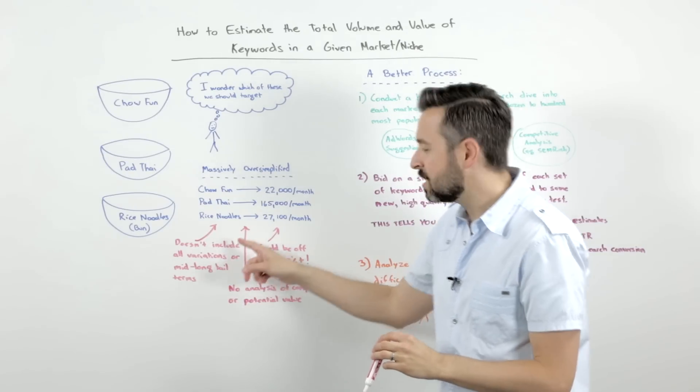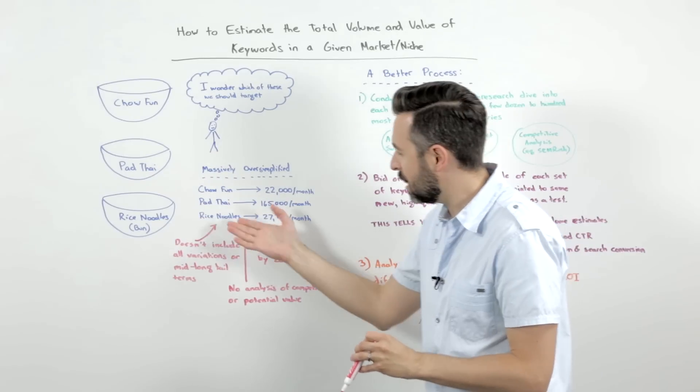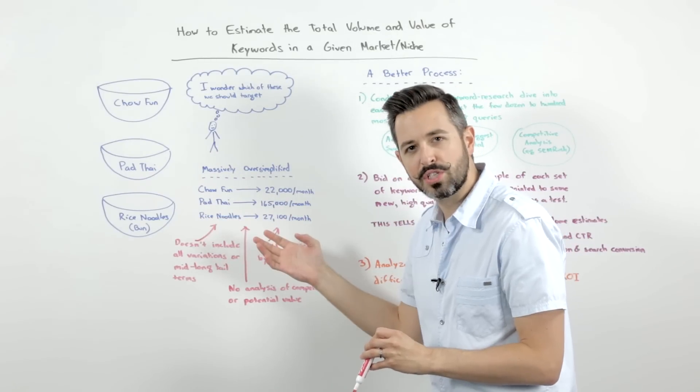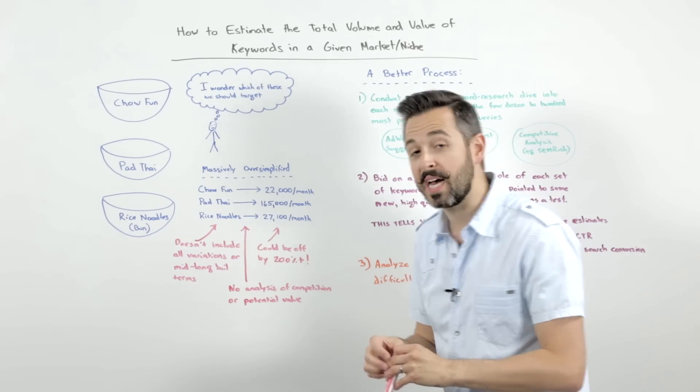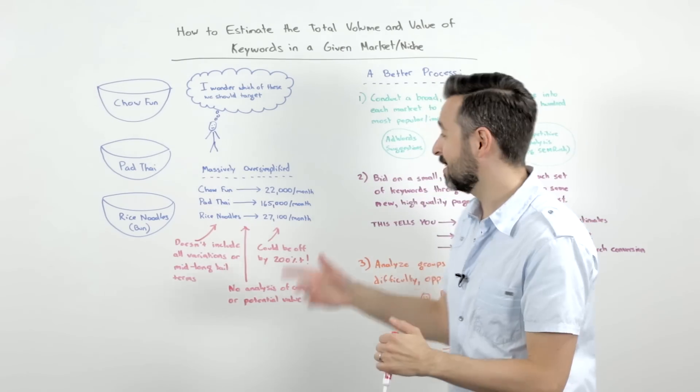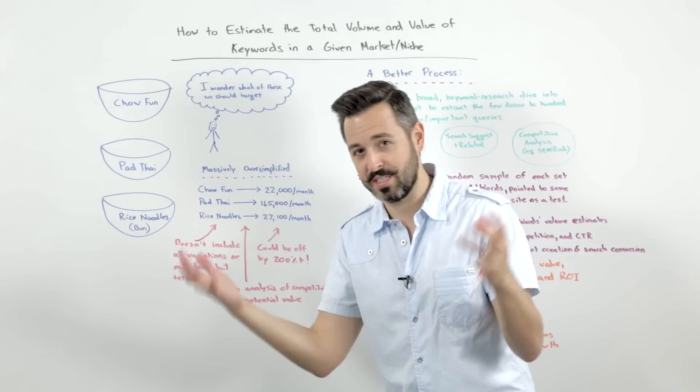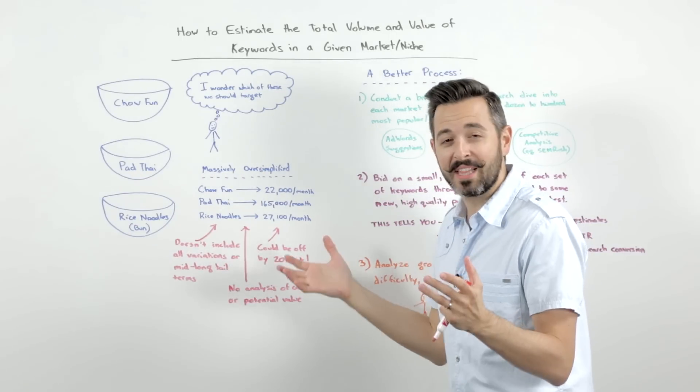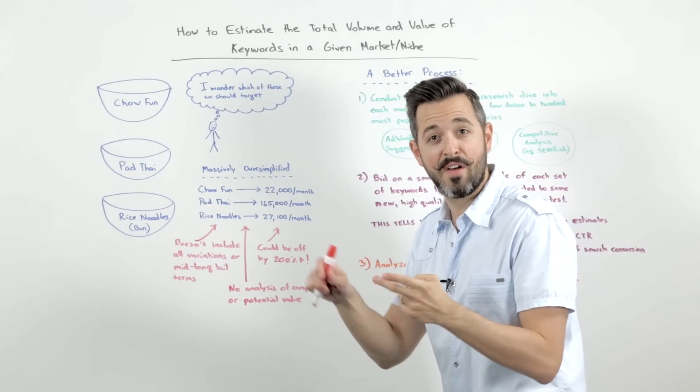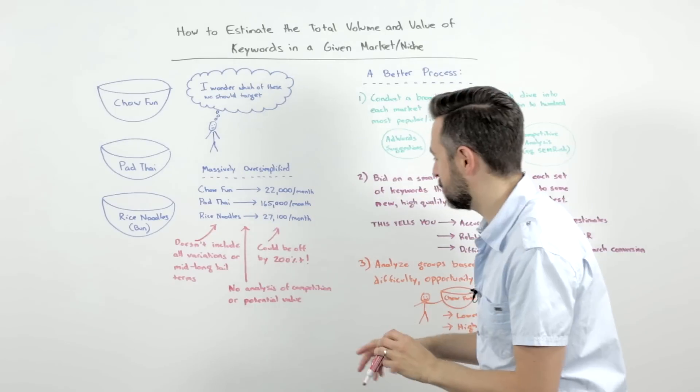It's not taking into account all the things we have to do to really understand the market. So first off, this isn't going to include all the variations, the mid and long tail keywords. So potentially, there might be a ton of variations of rice noodles that actually add up to as much or more than pad thai. Same thing with chow fun. In fact, when I looked, it looked like there's a ton of chow fun modifications and different kinds of things that go in there. The pad thai list is a little short. It's like chicken, vegetable, shrimp, beef, pretty simplistic.